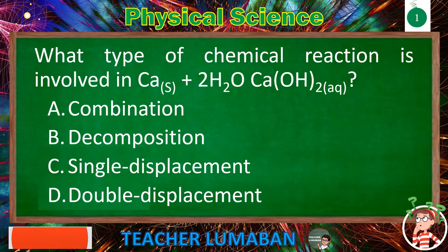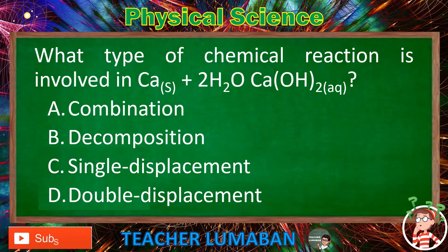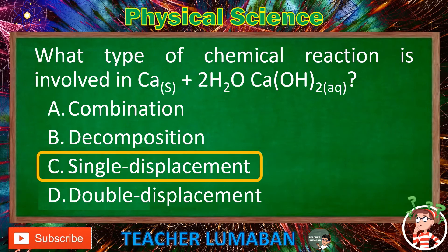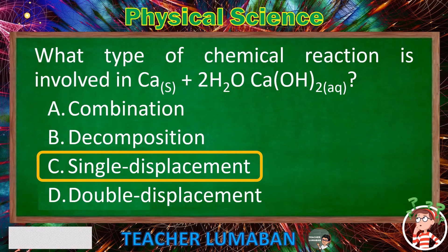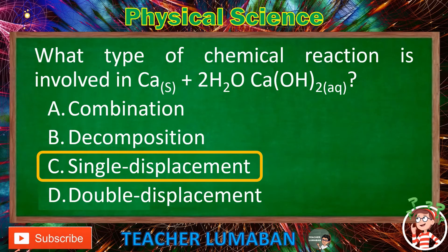The correct answer is Letter C: single displacement. Single displacement is the type of chemical reaction involved in Ca(S) + 2H₂O → Ca(OH)₂(aq).